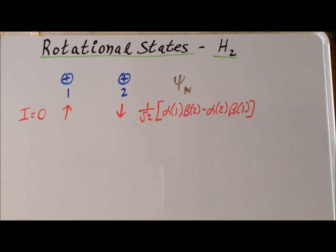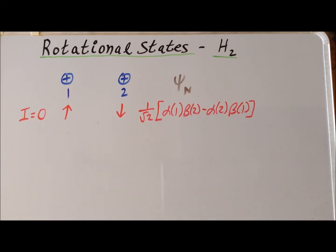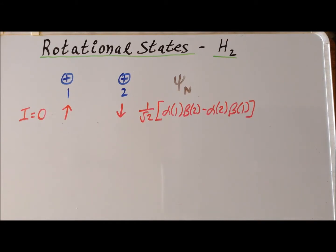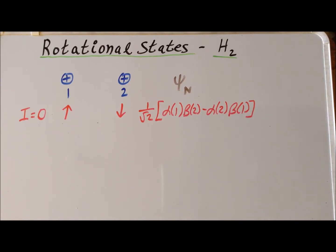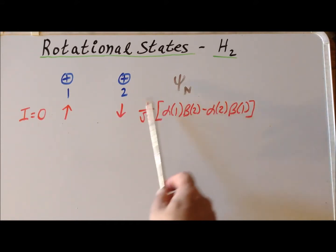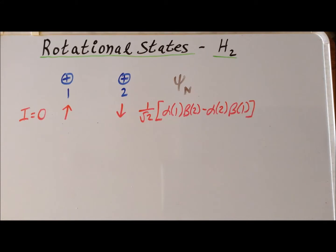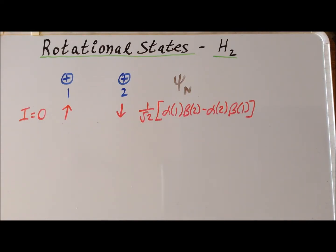We can define a nuclear part of the wave function, psi sub n, which has to be antisymmetric. For this antisymmetric singlet state, we can define spin functions exactly the same way that we would for electrons. Alpha means spin up, i equals one-half, and beta means spin down, minus one-half. We have this particular linear combination because if we switch one and two, the wave function has to change sign. This case of spin up and spin down we call para-hydrogen.